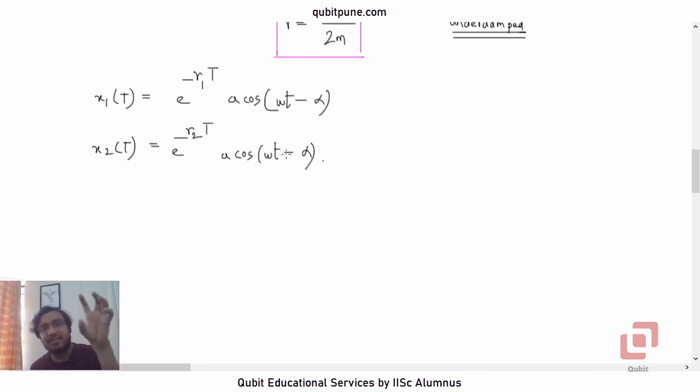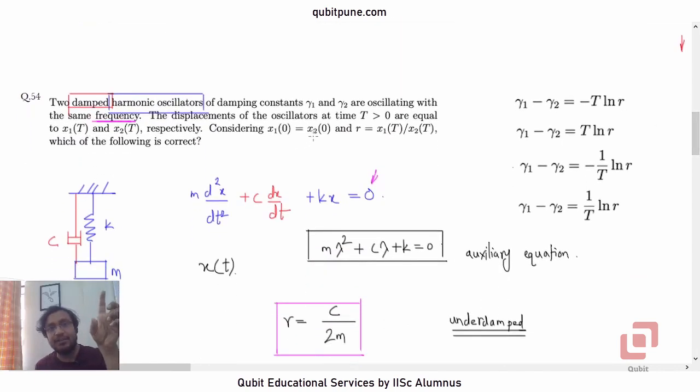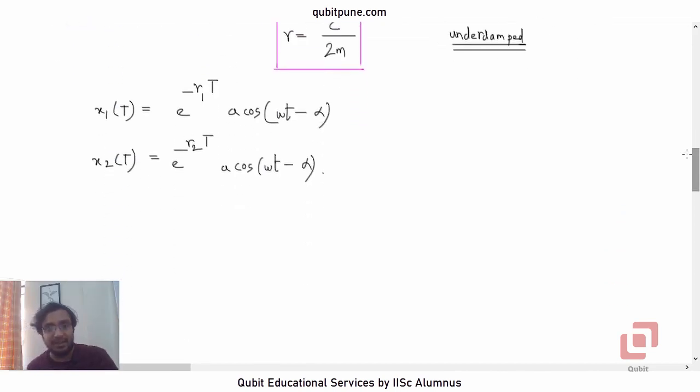And x₂(t) will be e^(-γ₂t) · a·cos(ωt - α). Now, you might ask, why are we taking a and α to be the same? Agreed that frequencies are same, so ω is same. But why are a and α same? Because, see, they are saying x₁(0) and x₂(0) are same. That is the reason why we are taking the values of a and α to be the same in both cases.